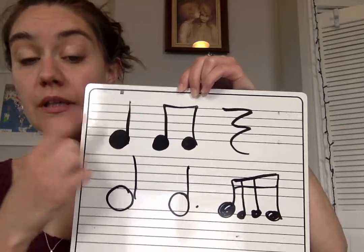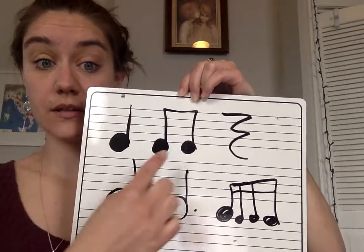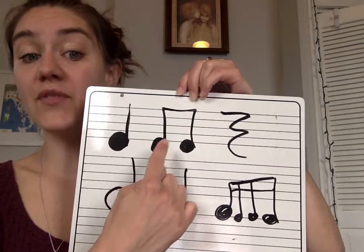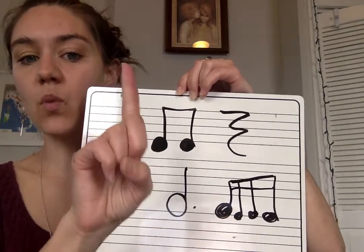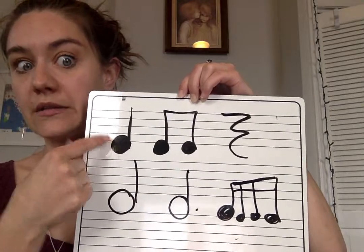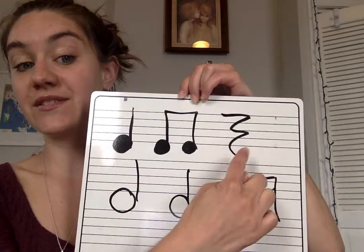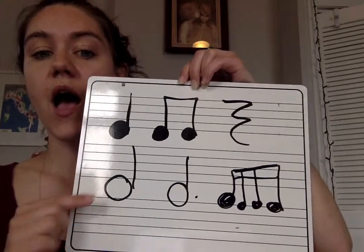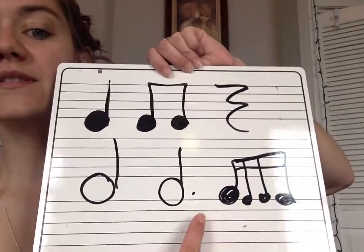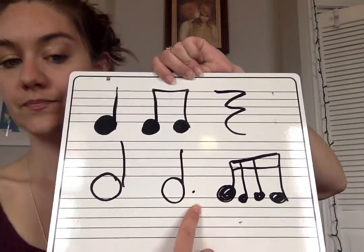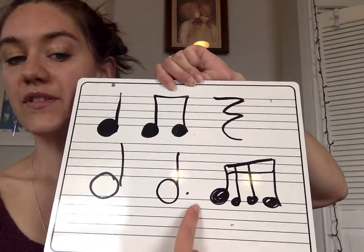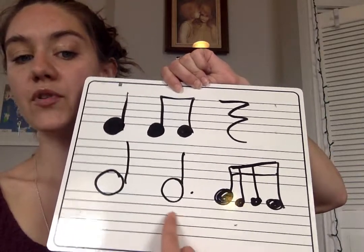Quarter note equals one beat. Eighth notes — each is worth a half, plus a half, equals one. Two of these equal one of these. A quarter rest is worth one beat. A half note is worth two beats. This is a dotted half note.